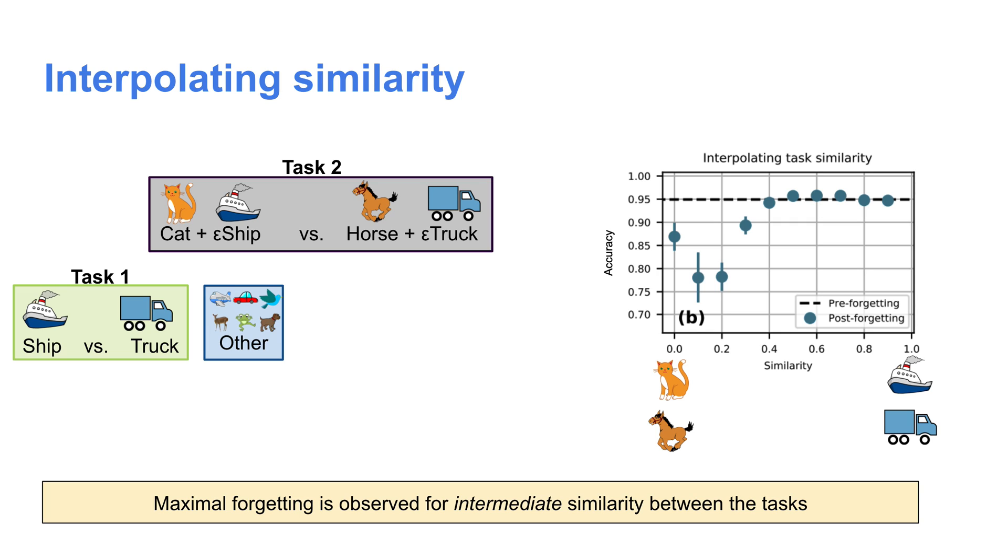Meaning that if we start increasing the similarity between task two and task one by injecting a bit of task one data into the task two training set, this first causes forgetting to get worse and then causes it to get better. So just as we thought, maximal forgetting is indeed caused by intermediate task similarity.